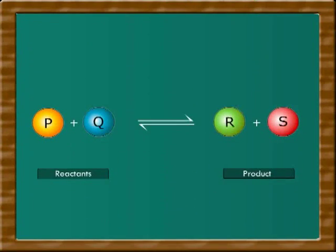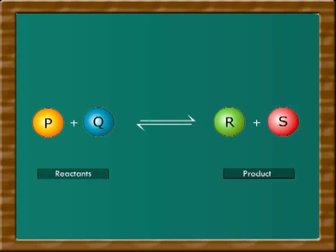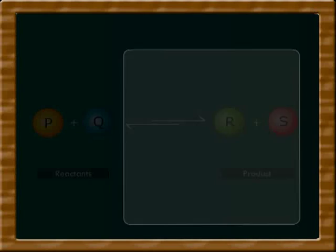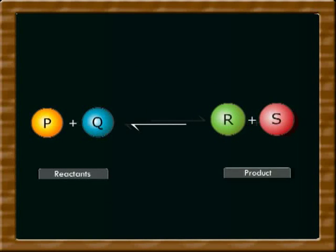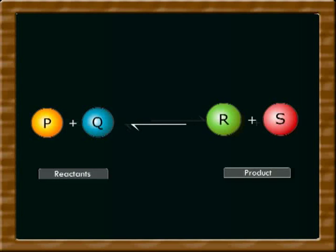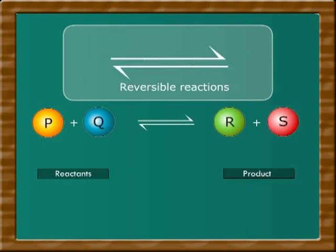In some reactions, both forward reaction and backward reactions take place simultaneously. Here, the product forms react with each other to give original reactants. These reactions are called as reversible reactions. A reversible reaction is represented by two half arrows pointing in opposite directions.